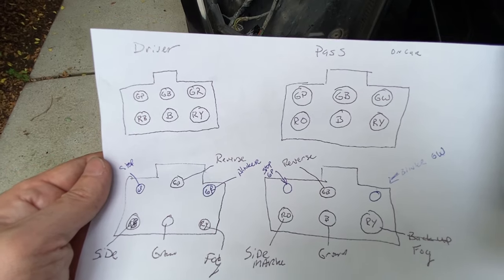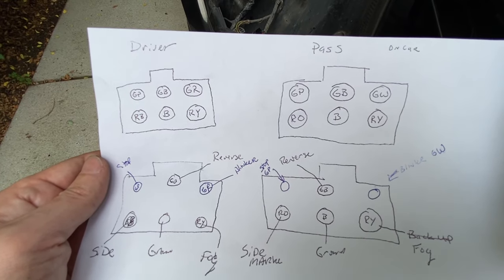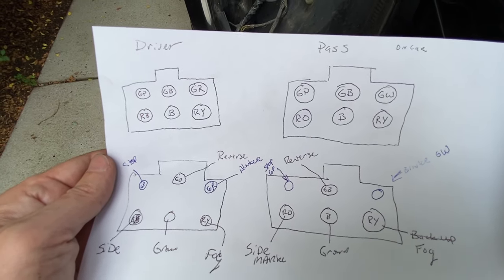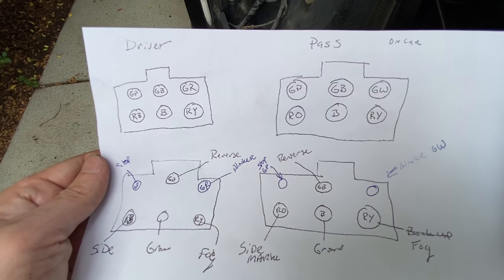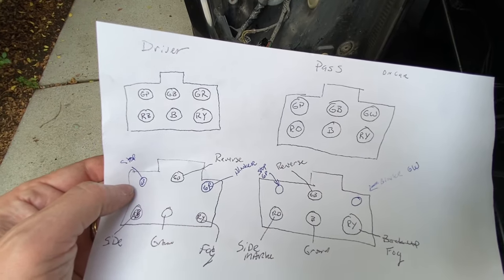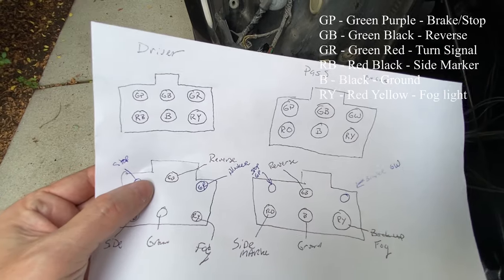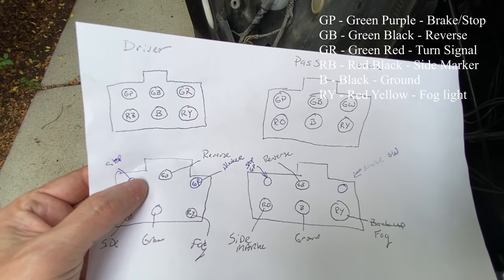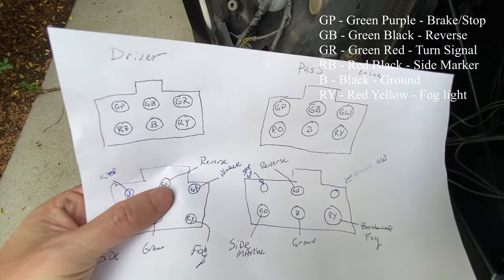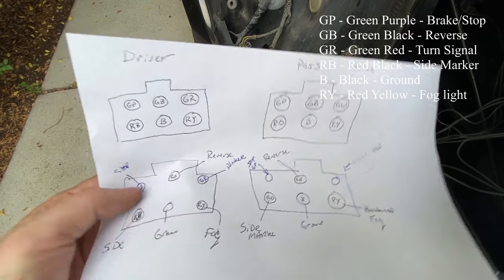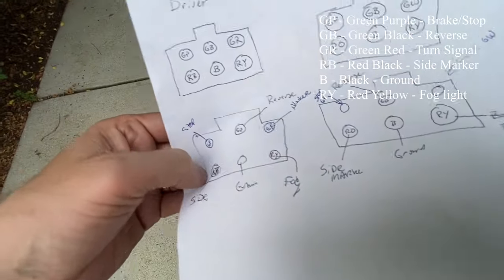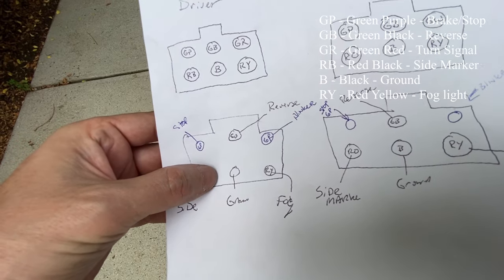Stoplight is green-purple, reverse is green-black, turn signal is green-red, side marker light is red-black, your ground is black, and your fog light is red-yellow.